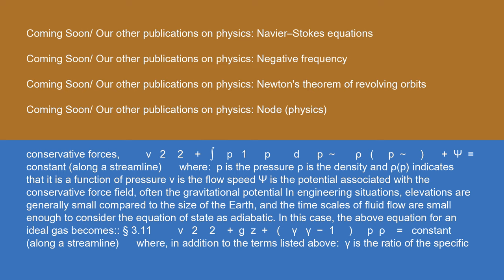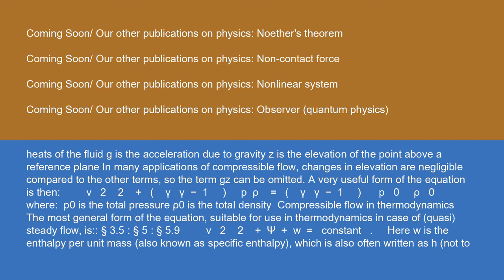Where, in addition to the terms listed above, γ is the ratio of the specific heats of the fluid, g is the acceleration due to gravity, and z is the elevation of the point above a reference plane. In many applications of compressible flow, changes in elevation are negligible compared to the other terms, so the term gz can be omitted. A very useful form of the equation is then: v²/2 + γ/(γ−1) · p/ρ = γ/(γ−1) · p₀/ρ₀, where p₀ is the total pressure and ρ₀ is the total density.